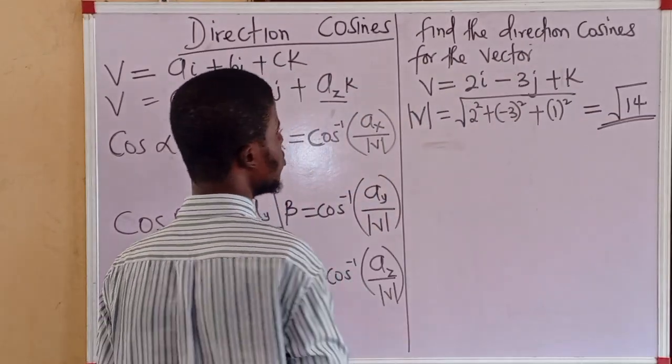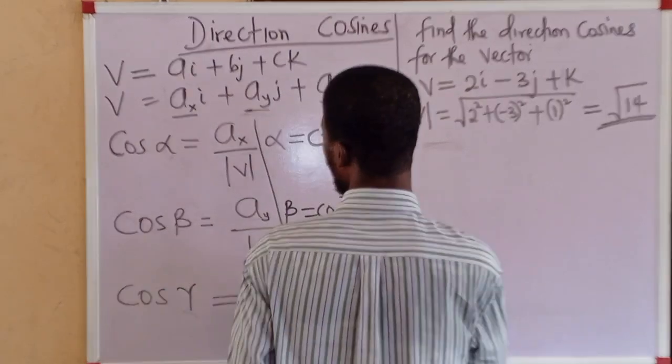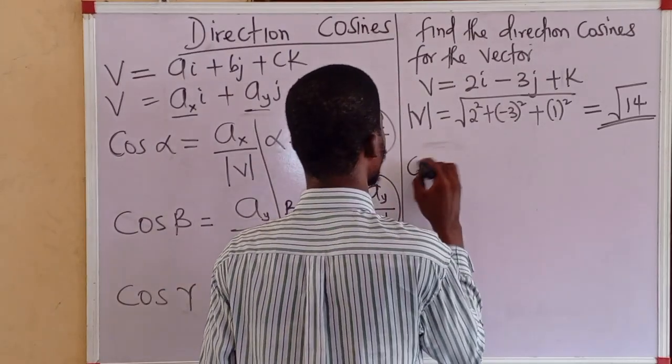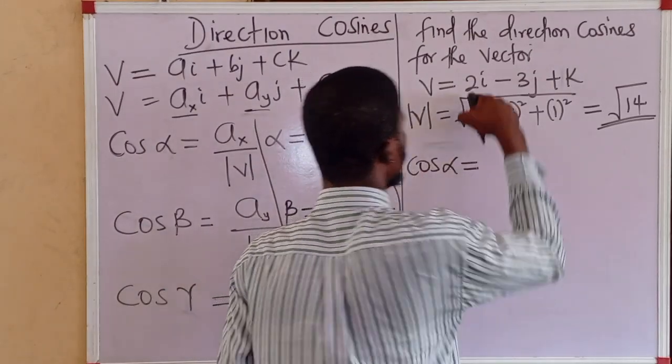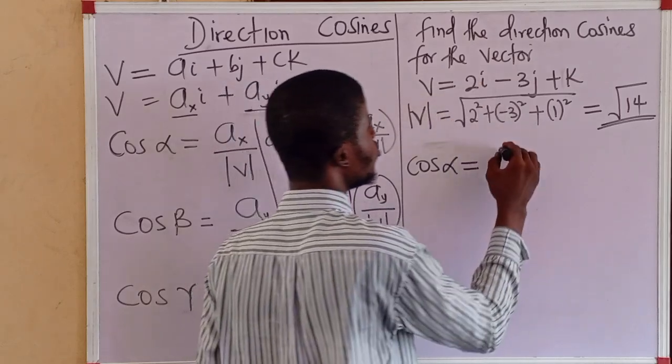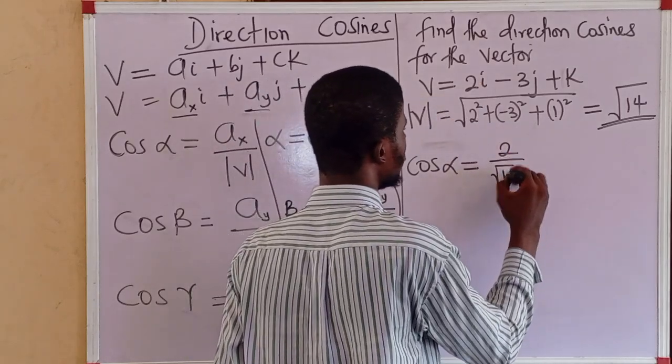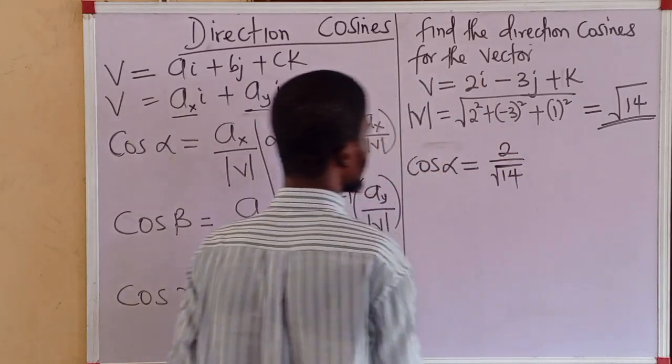So, the direction cosines are this. Along the x axis, we have cos alpha equal to the x component 2 all over root 14.